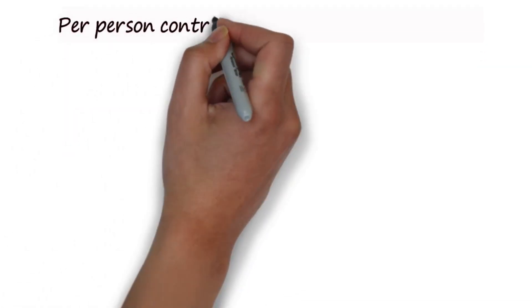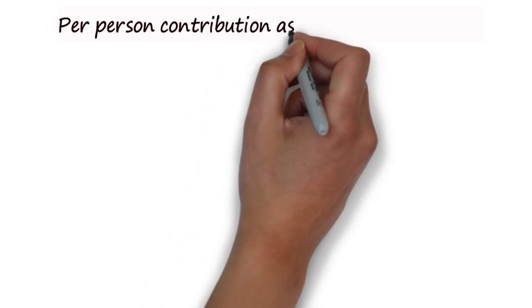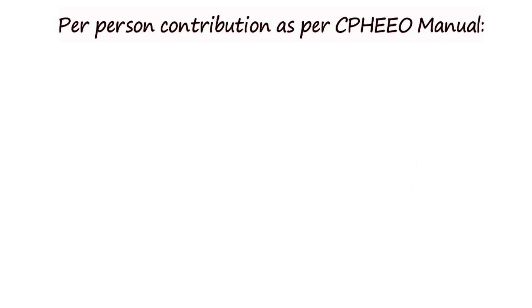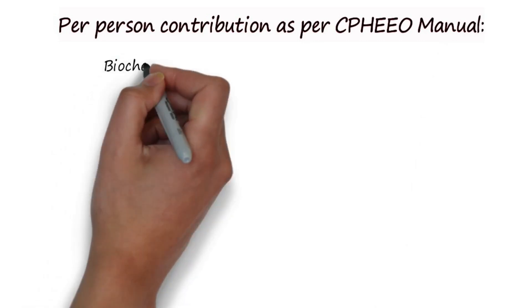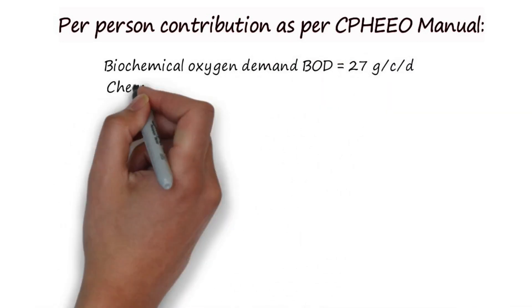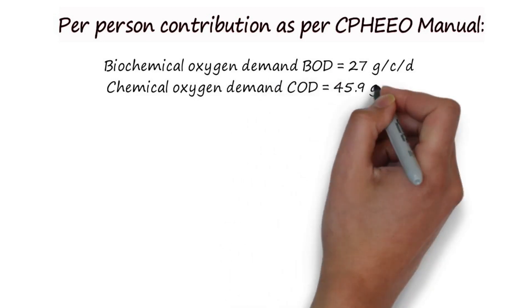According to CPHEO manual, in the wastewater there is a contribution of waste generated by per person per day. For instance, BOD contribution is 27g per capita or per person per day. COD is 45.9g per capita per day.